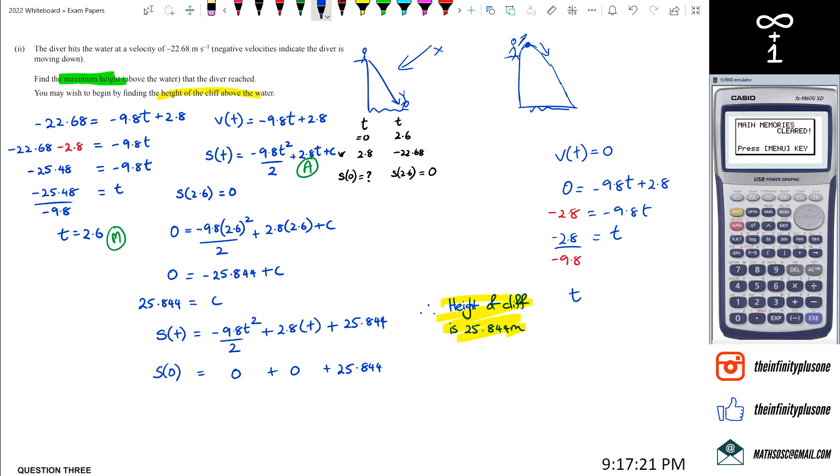We'll have 2.8 ÷ 9.8, that's going to give us 0.2857 or whatnot, but we're just going to put that as 0.29 seconds. So what we're trying to do is find out the height at 0.29 seconds.